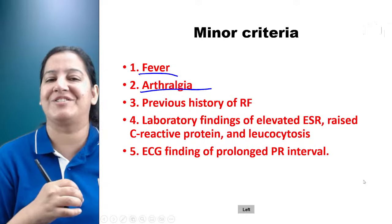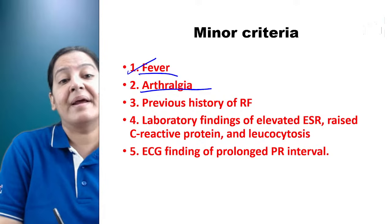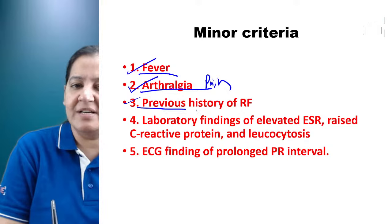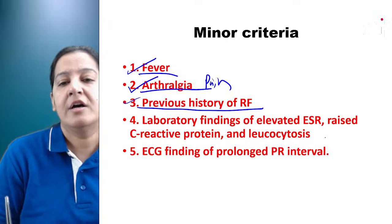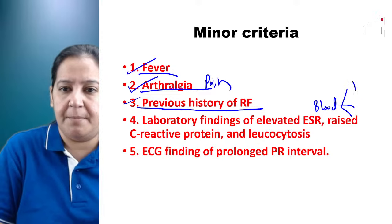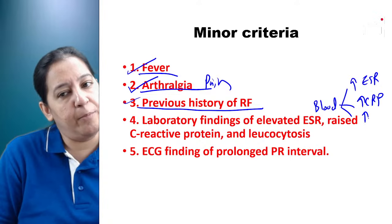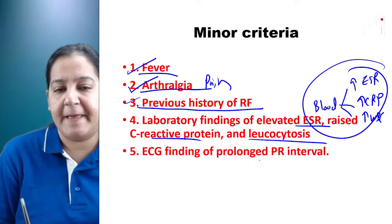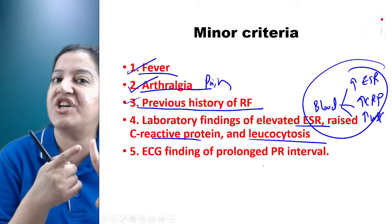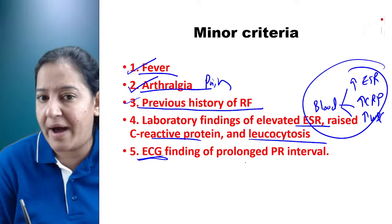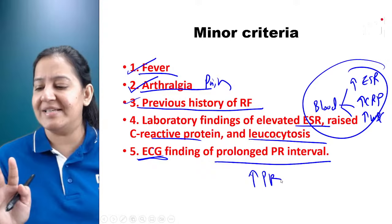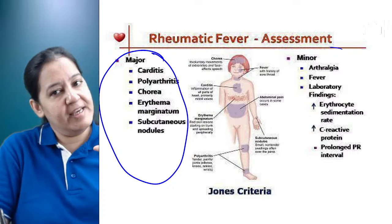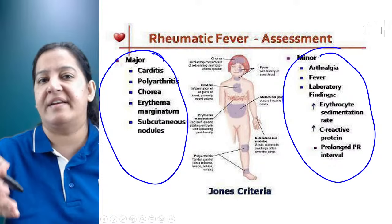The five minor criteria are: (1) fever, (2) arthralgia (pain, not inflammation), (3) previous history of rheumatic fever, (4) three raised blood markers — elevated ESR, elevated CRP, and leukocytosis (raised WBC), and (5) prolonged PR interval on ECG (when the heart is involved). After years with Jones criteria, a revision came — the revised Jones criteria.